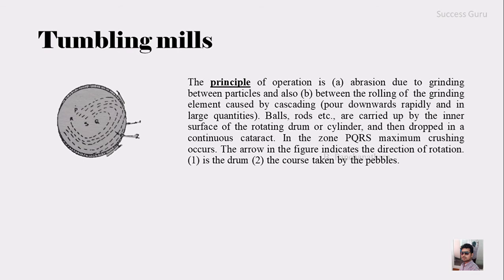They also use balls, rods, conglomerates, etc., so that the grinding is finer. Here is a sketch of the basic principle of this tumbling mill. You can see the region PQRS, which is the portion where maximum crushing takes place. The arrows show the direction of rotation of the drum. The course taken by the pebbles is shown: pebbles move with the drum to some extent, then due to the angle of repose they fall down and hit the material being ground.